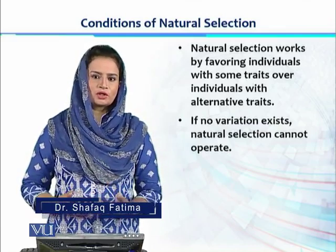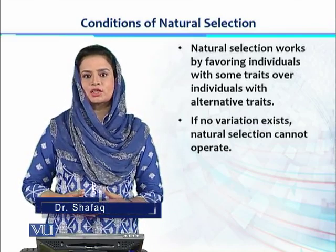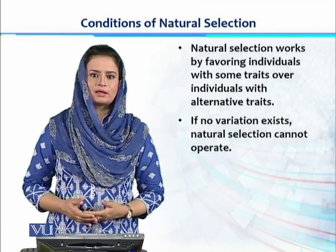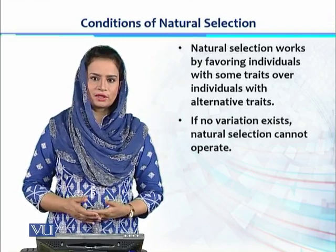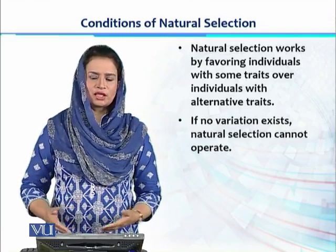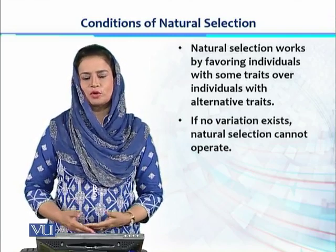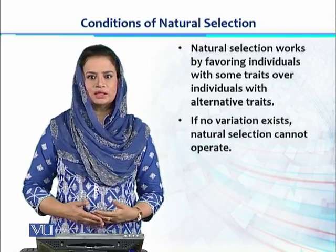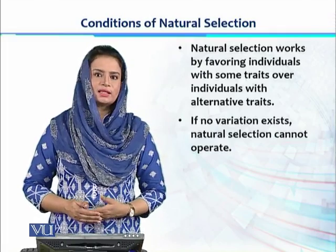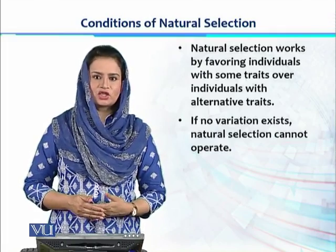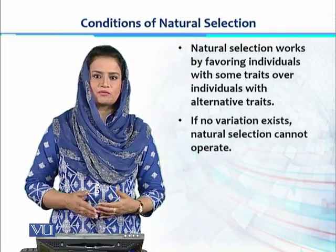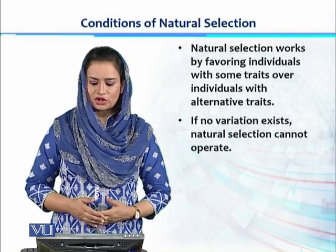Such variations exist among different individuals. Natural selection non-randomly selects one trait among them and favors it for its dispersion in that population, and maybe from one population to another population as well. So it is important that a trait must have variation among individuals so that natural selection can favor one of these variations.